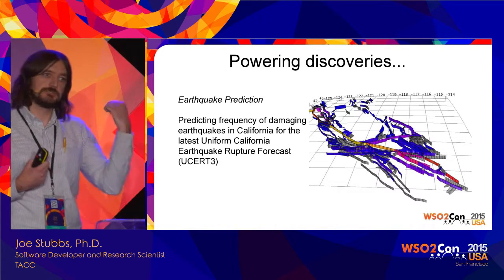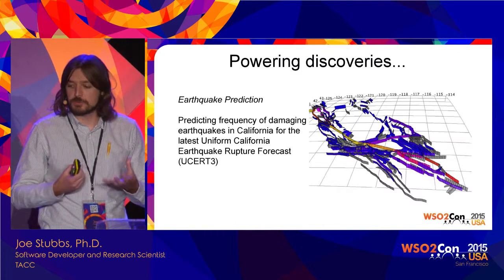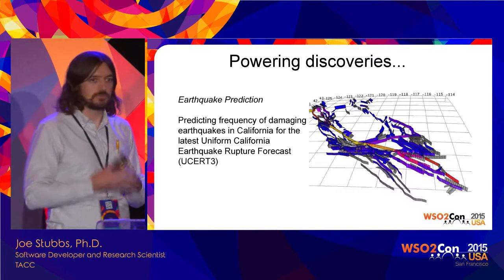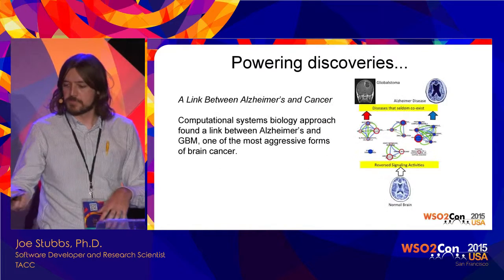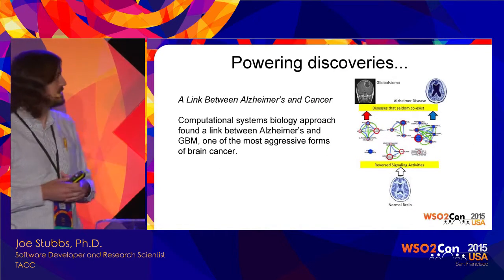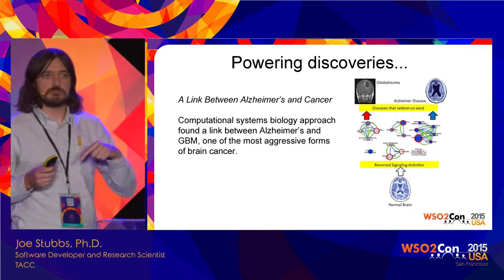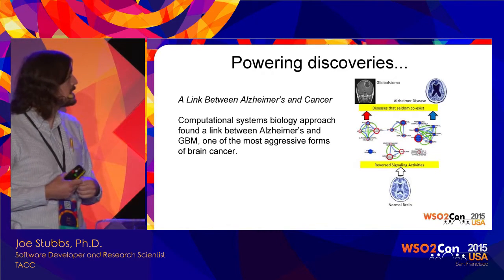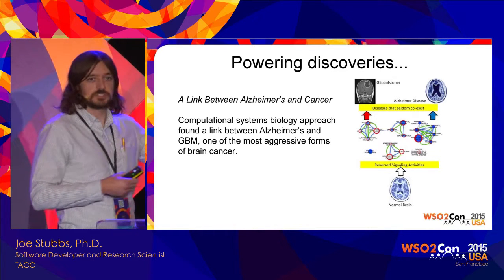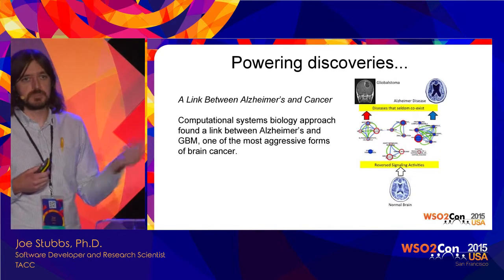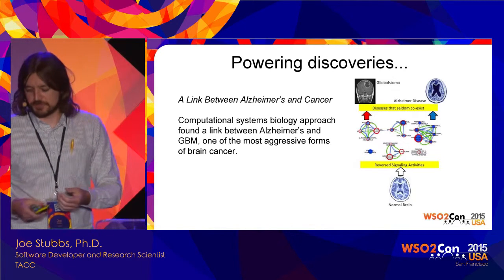We also had a group at USC that used HPC resources at TACC to do earthquake prediction. These models are really important — they're used for things like building codes and insurance rates. One of the biggest areas of growth for us is in life sciences and computational medicine. A study done by a UT medical branch in Houston, together with scientists at Harvard and a group in Japan, used a computational systems biology approach that uncovered a link between Alzheimer's and a very aggressive form of brain cancer. We really feel we are providing services that are changing the world on a day-to-day basis.